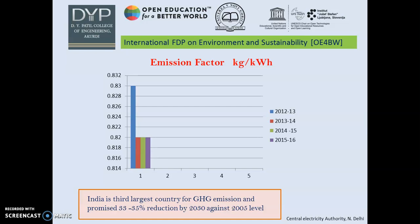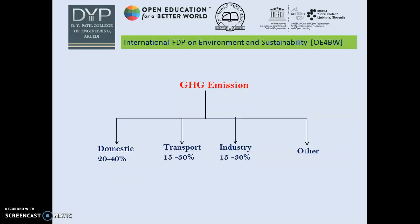When studying this emission factor and electricity use across sectors, I found very interesting data. There are four sectors: domestic, transport, industry, and other. Data collected from Indian cities like Delhi, Mumbai, Kolkata, Hyderabad, Bangalore, Ahmedabad, and Chennai shows that figures change from city to city, but roughly the domestic contribution is 20 to 40 percent. Transport varies more — 15 to 30 percent generally, but for Bangalore and Hyderabad it is more than 40 percent. This made me excited to calculate my own CO2 emissions from household activities.